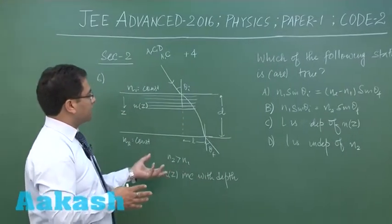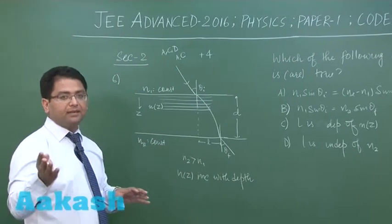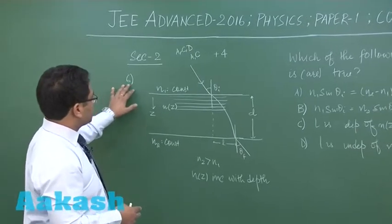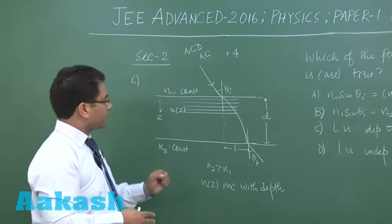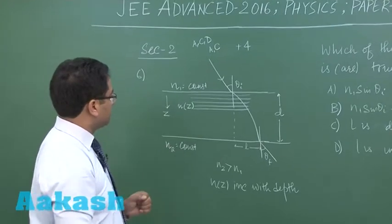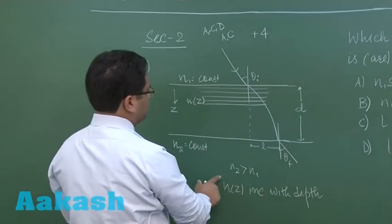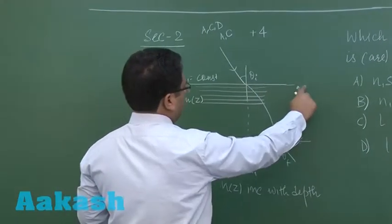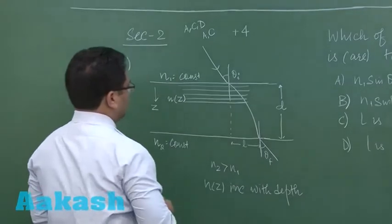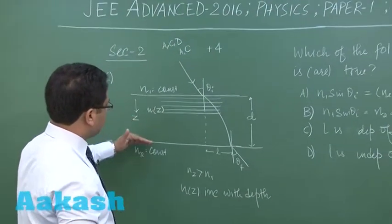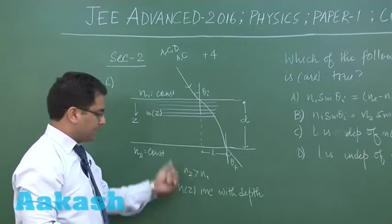So this is the case where there is four marks, the partial marking scheme, and the negative marking. Question number six, the first question of this section, is brought from ray optics. This medium has a refractive index constant as n₁, this has n₂, and the medium has a depth of d. The refractive index is varying: z increases with depth and n is a function of z in this way.